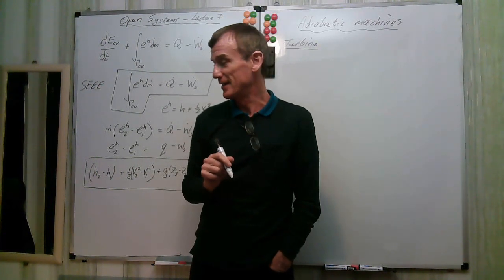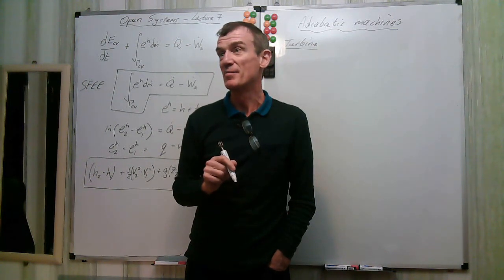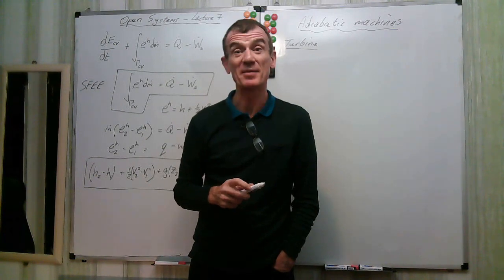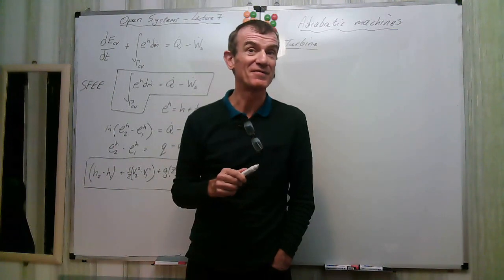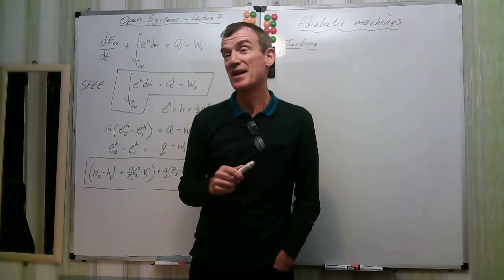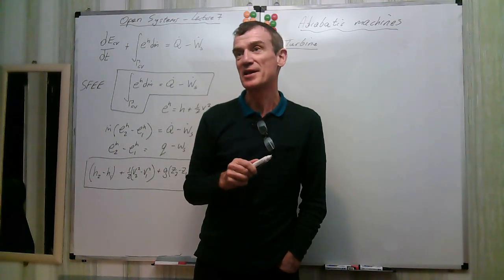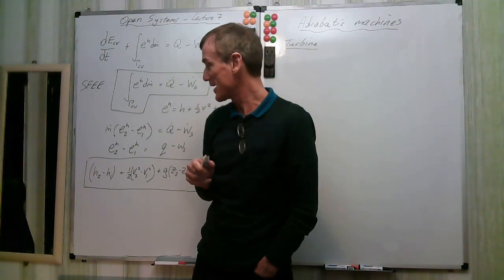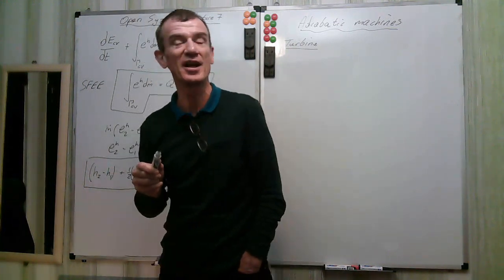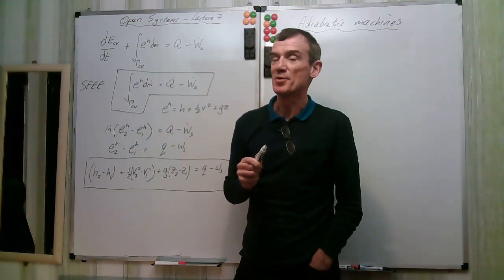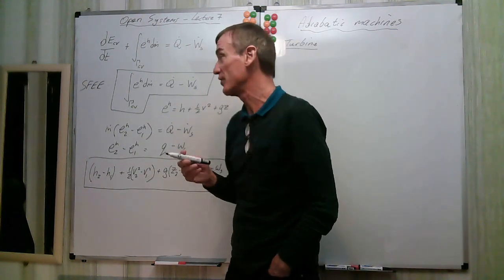Turbines are found in power stations for generating electricity, in tanks for driving them, and in aircraft. In aircraft we tend to use the exit velocity through a nozzle to give thrust, so there are some mechanical terms involved. Let's have a look at this — my turbine consists of a shaft coming out, with power output WS dot.